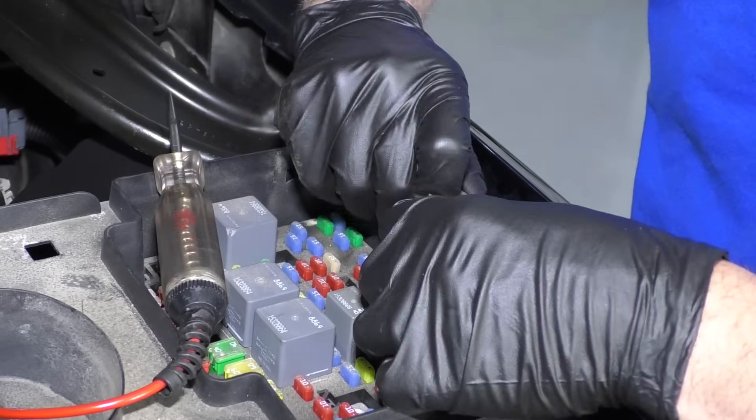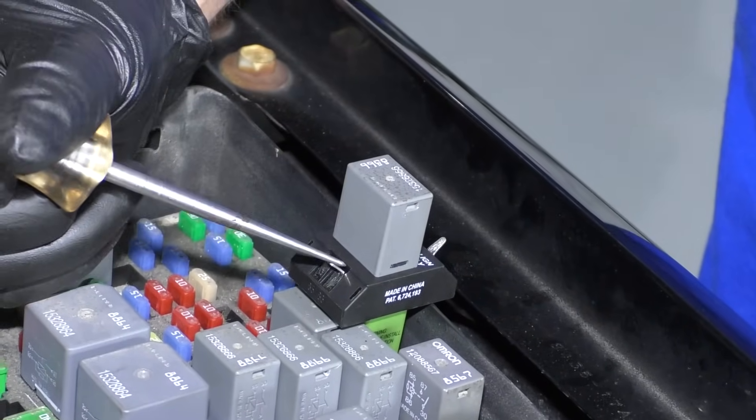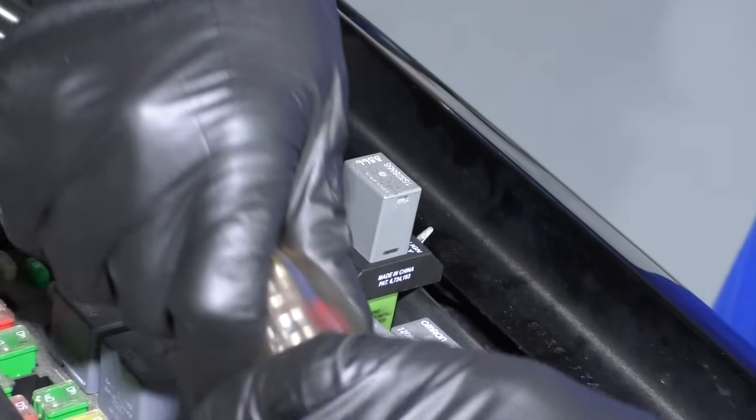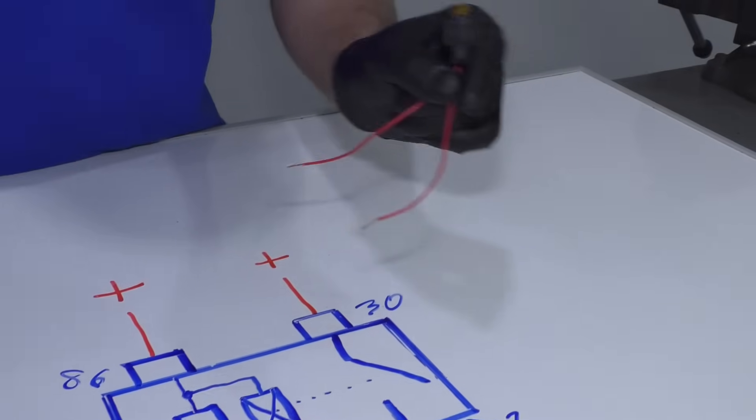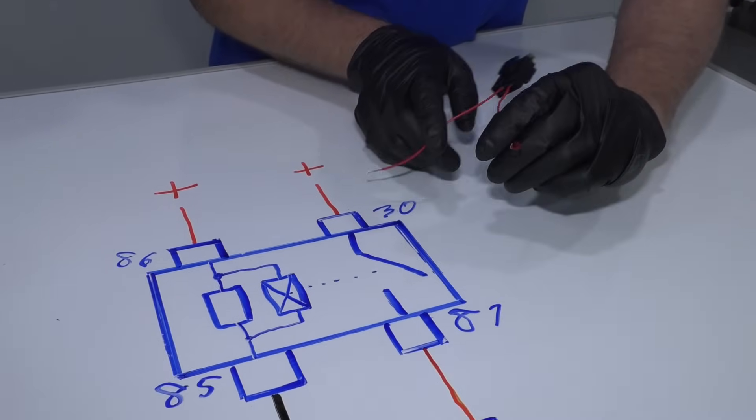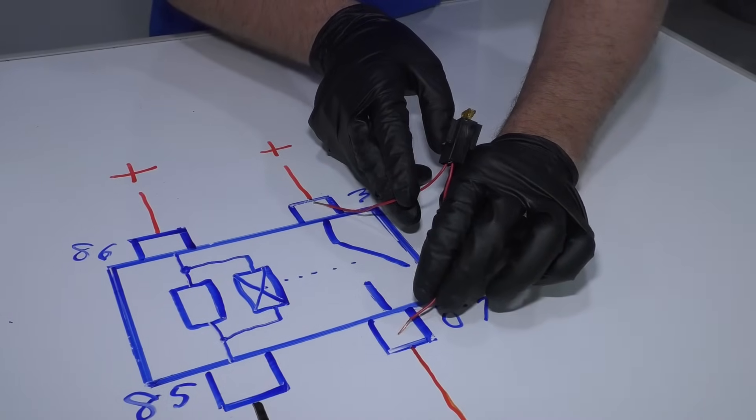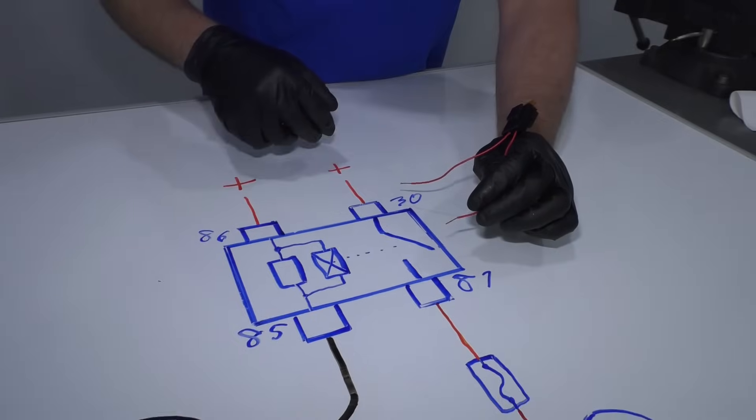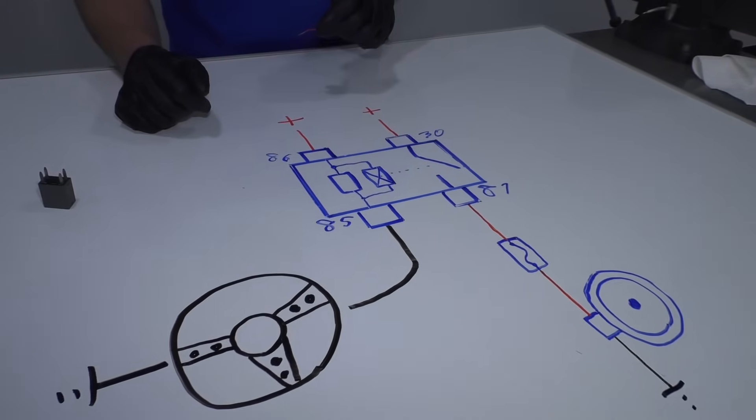If we had a good relay, and we did the same thing, you're going to get the horn to go off. Or you could also take a fused jumper harness. And if you jump the two terminals, terminal 30 and 87, you're going to hear the horn. Or at least hopefully you hear the horn if everything else is working in this circuit. Then you know the relay is bad.